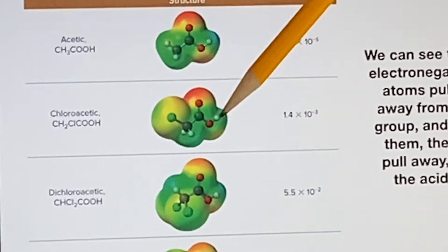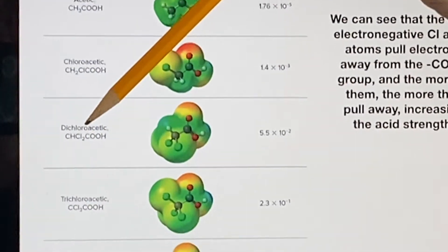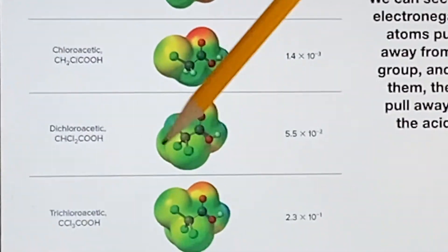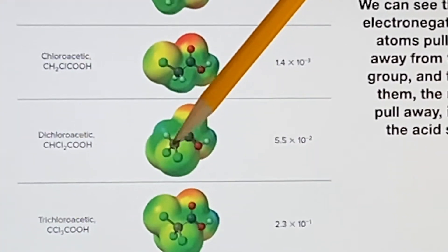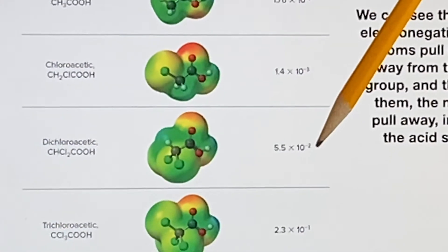Now dichloroacetic—okay, we have replaced two of these hydrogens with chlorine. See, there they are, now there's two of them all still pulling away from that bond. And again, it gets a little stronger, right, from minus 3 to minus 2 for that exponent.